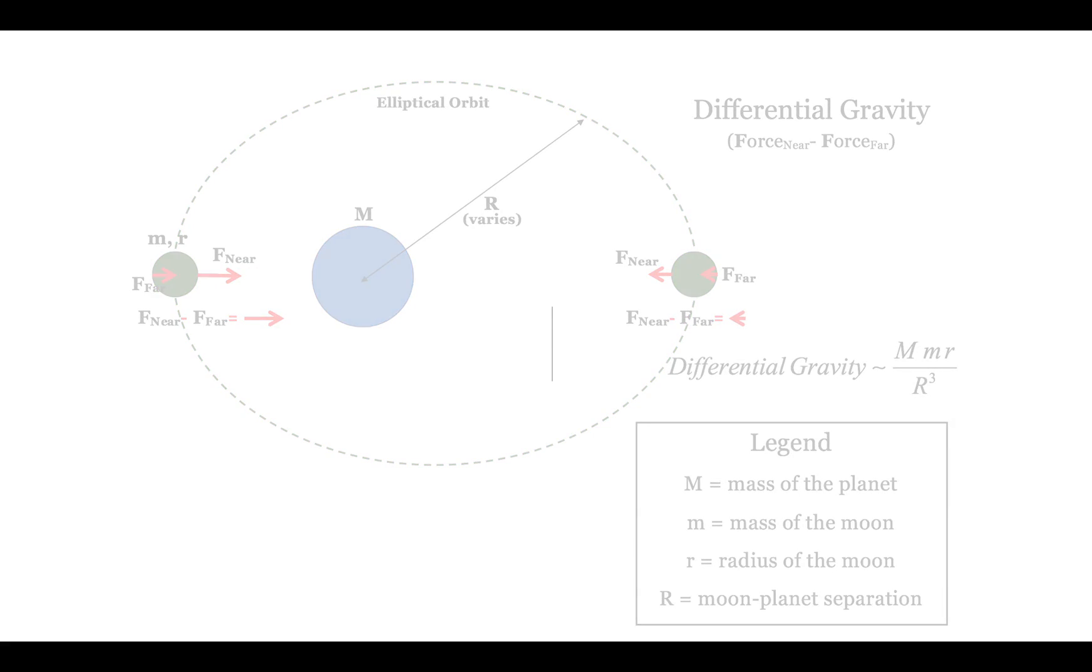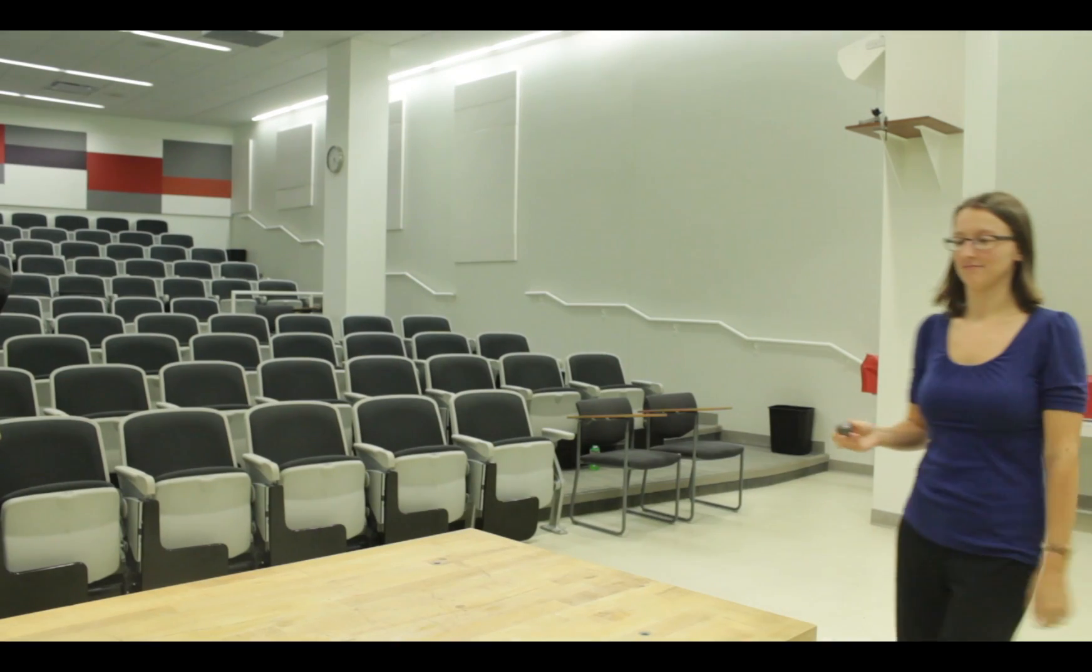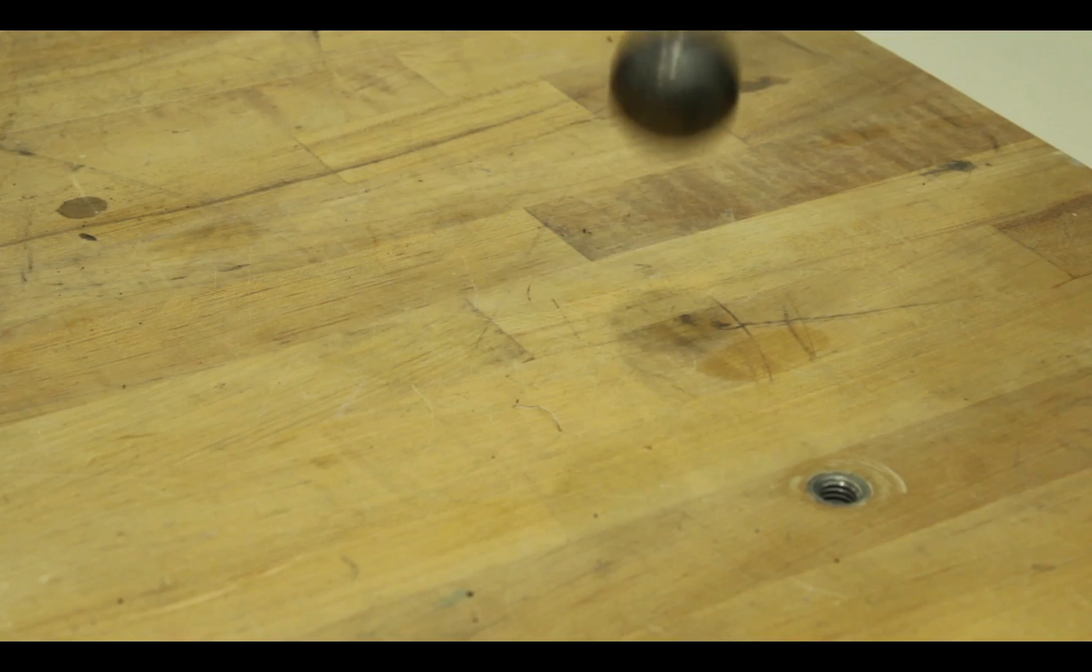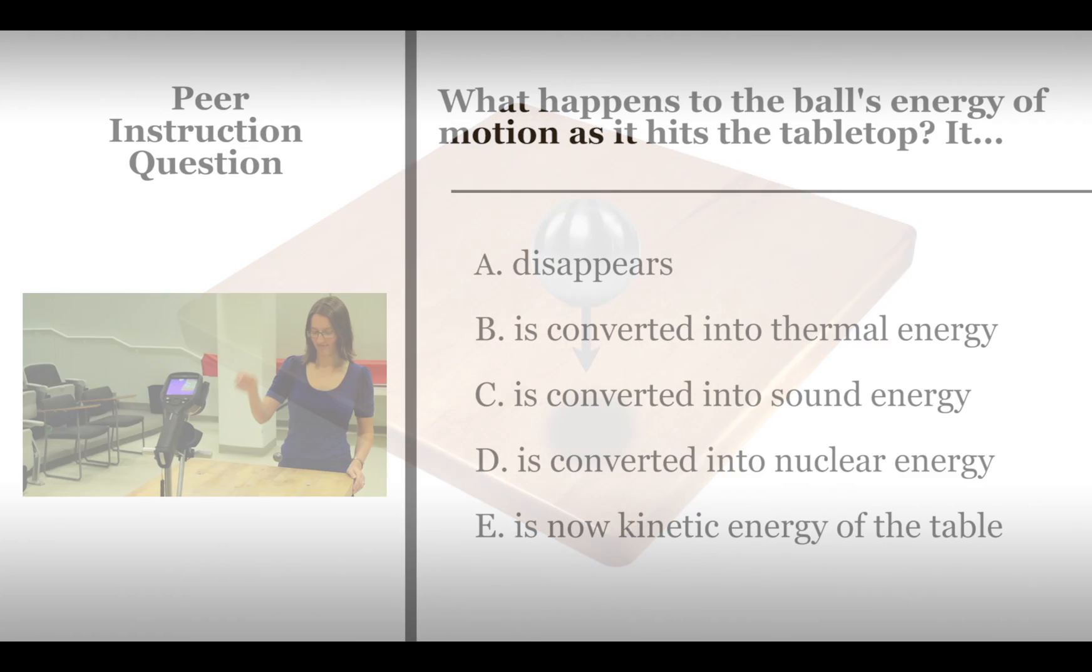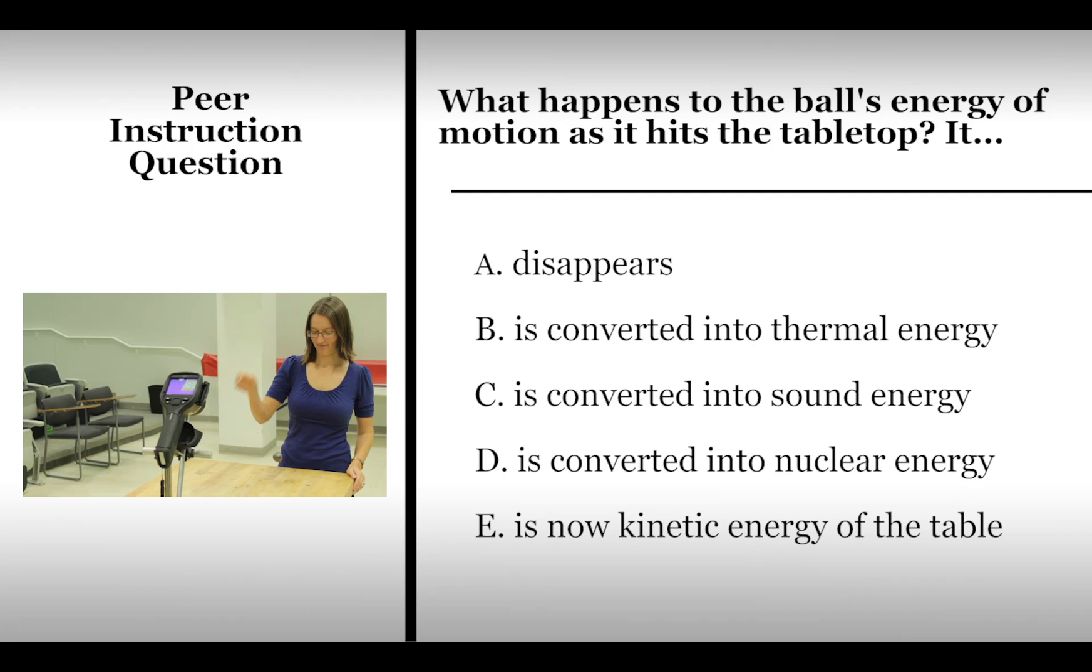Let's explore some related physics. Imagine that we have a heavy steel ball and we drop it onto a tabletop. The ball has energy of motion, what physicists call kinetic energy, immediately before it hits. What happens to this kinetic energy when the ball hits the table?